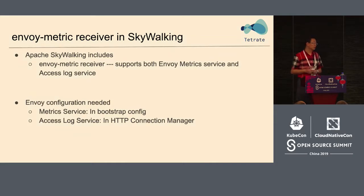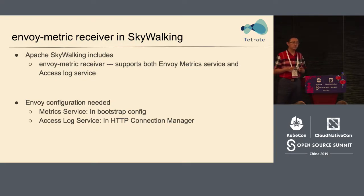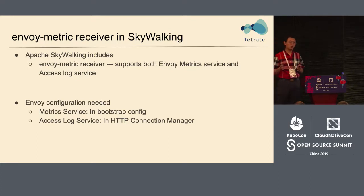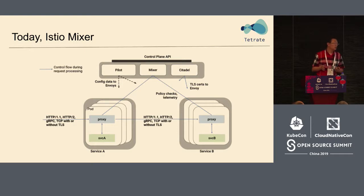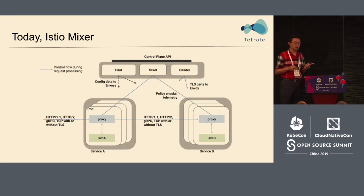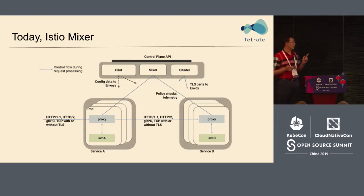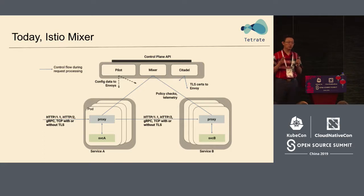Lisanne told us about two services we are going to use. Simplifying them: we get two types of data — one is Envoy connection information, and the other is regular information from the access log. We usually use Istio to manage the orchestration of Envoy.